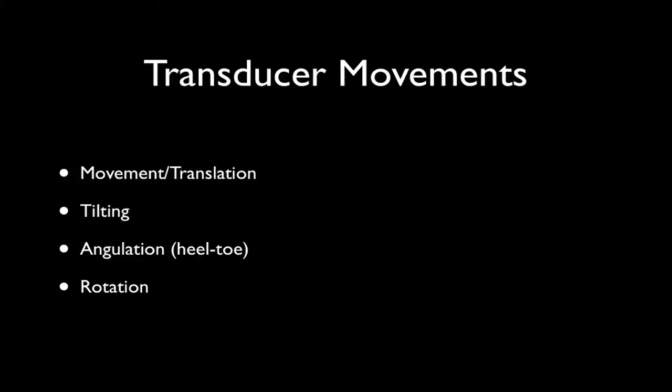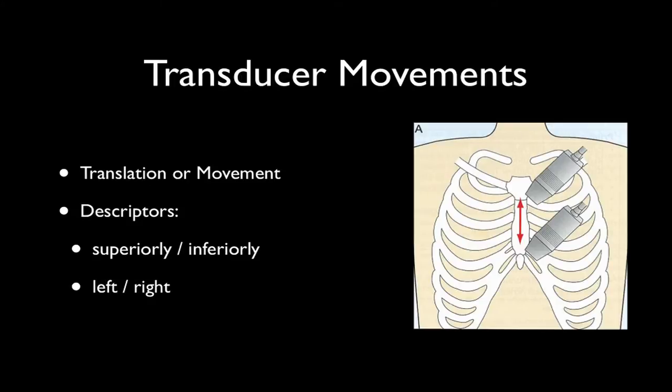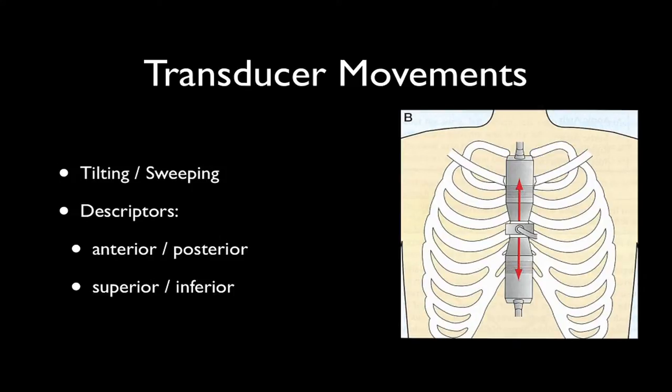Before we get on to the actual standard views, we need to revise transducer movements — the cardinal movements that can be performed with the transducer. Using standard nomenclature: first, we can translate or move the probe, where the angle the probe makes to the skin stays constant but the position on the body is changed. One can move the probe superiorly towards the head, inferiorly towards the feet, left, right, medial, or lateral.